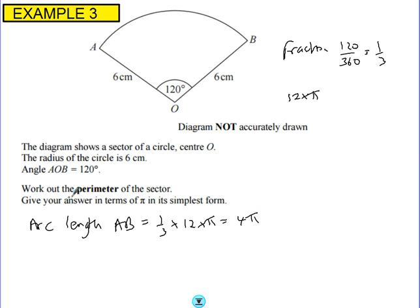Now, that's the arc length. This is the perimeter. So we've got to say it's that distance plus this distance plus this distance. So the perimeter is simply 4π plus 12. And there's your answer.